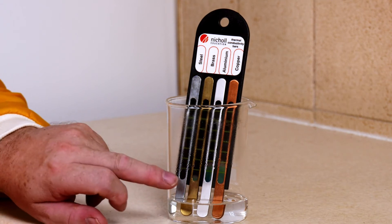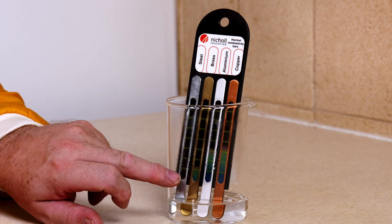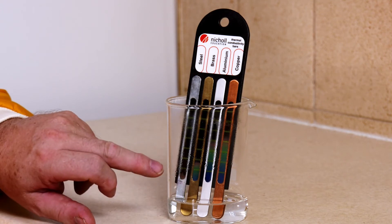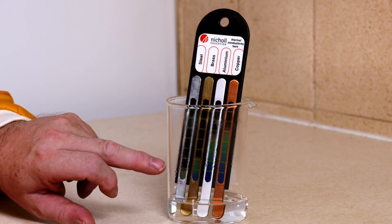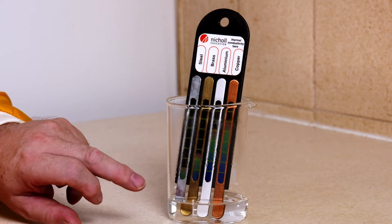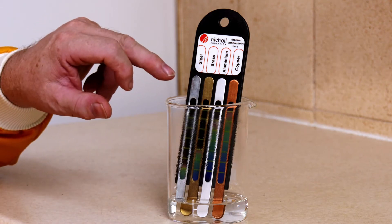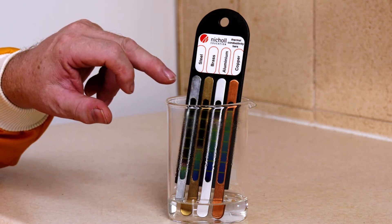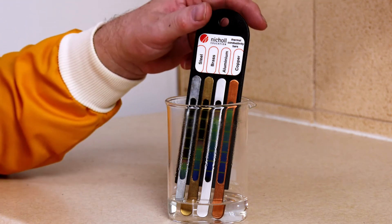Immediately we can see the copper and the aluminium are doing really well. I think the copper is just in the lead. The brass has started to go and now we can see the copper is winning clearly. And here we go, the copper has just won and now the aluminium.